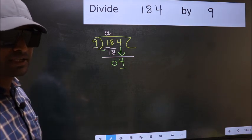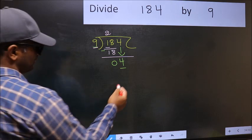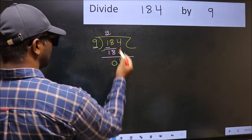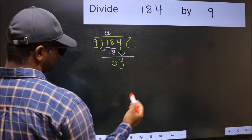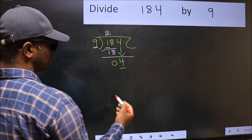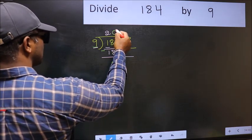Instead, what you should think of doing is, which number should we take here? If I take 1, we will get 9. But 9 is larger than 4. So what we should do is, we should take 0.